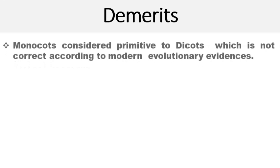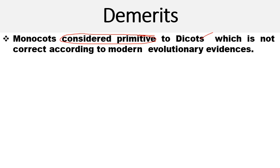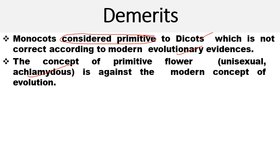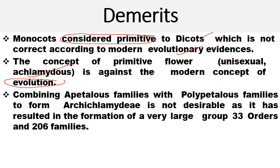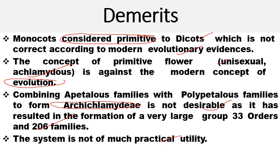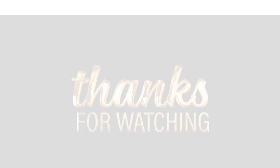Regarding demerits: monocots were considered primitive relative to dicots, which is not correct according to modern evolutionary evidences. The concept of the primitive flower being unisexual and achlamydeous is against the modern concept of evolution, as these are actually considered advanced flowers. Combining apetalous families with polypetalous families to form Archichlamydeae is not desirable, as it resulted in the formation of a very large group of 33 orders and 206 families. The system is also not of much practical utility.